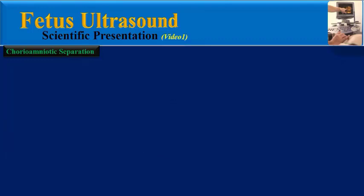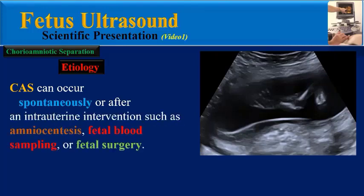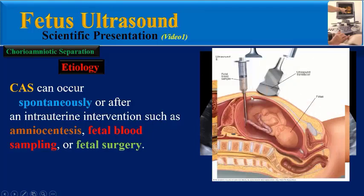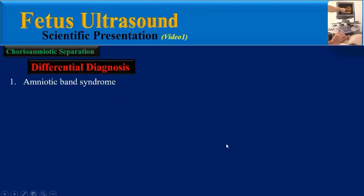What is the etiology? Chorioamniotic separation can occur spontaneously or after an intrauterine intervention such as amniocentesis, fetal blood sampling, and fetal surgery. Is there any differential diagnosis for chorioamniotic separation? The first differential diagnosis is amniotic band syndrome, which has obvious findings and should not be difficult to differentiate.